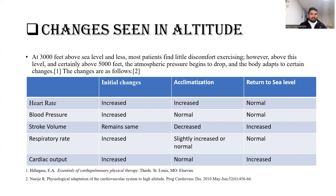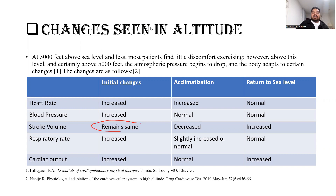At altitude initially, cardiac output is increased since it's a normal situation. Cardiac output equals heart rate times stroke volume — so if heart rate is already increasing cardiac output, stroke volume thinks 'if I also increase it'll cause too much pressure on the heart,' so stroke volume remains the same. Oxygen levels are lower and you're doing activity, so respiratory rate is also increased.